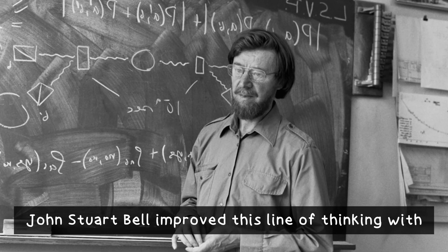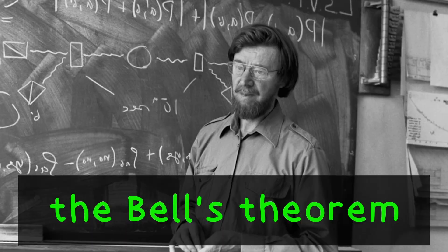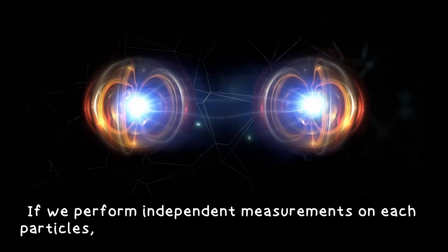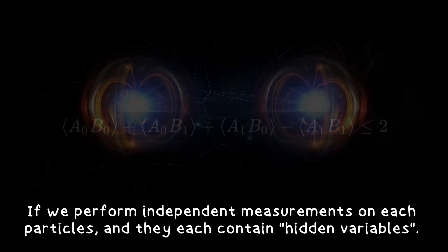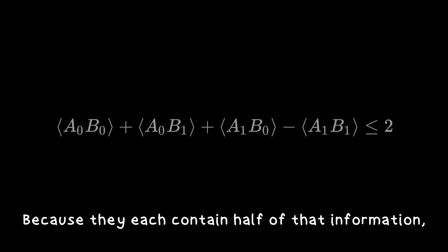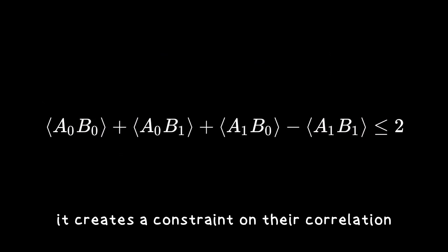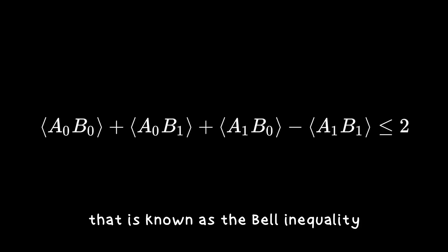John Stuart Bell improved this line of thinking with Bell's theorem. If we perform independent measurements on each particle, then they each contain hidden variables. Because they each contain half of that information, it creates a constraint on the correlation that is known as the Bell inequality.